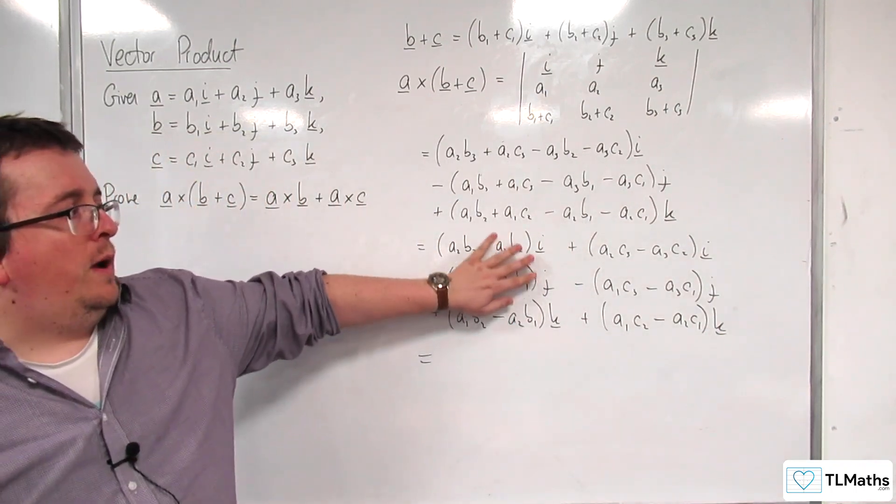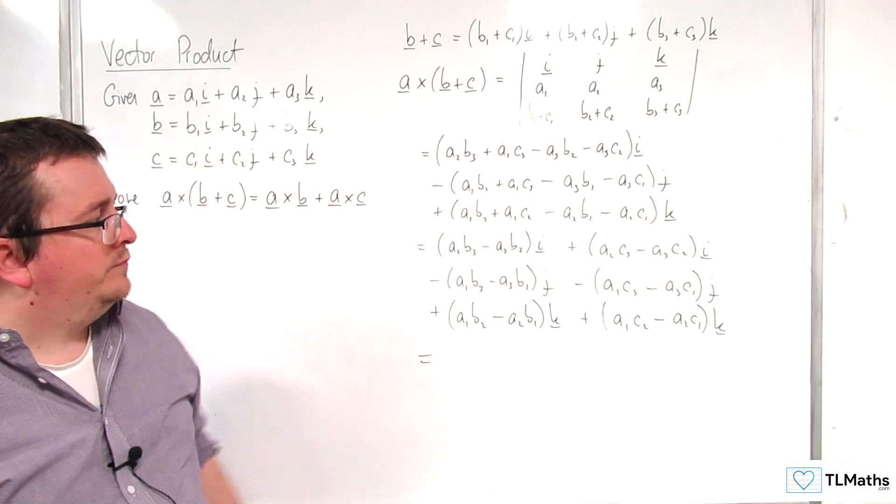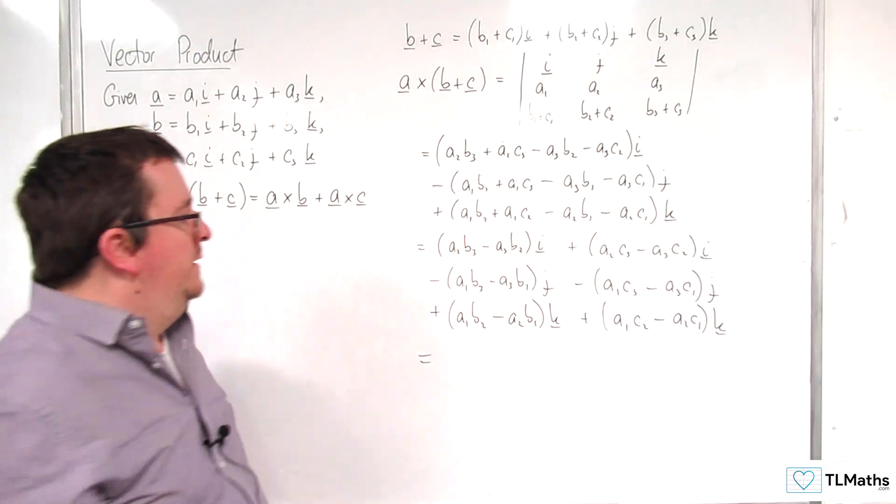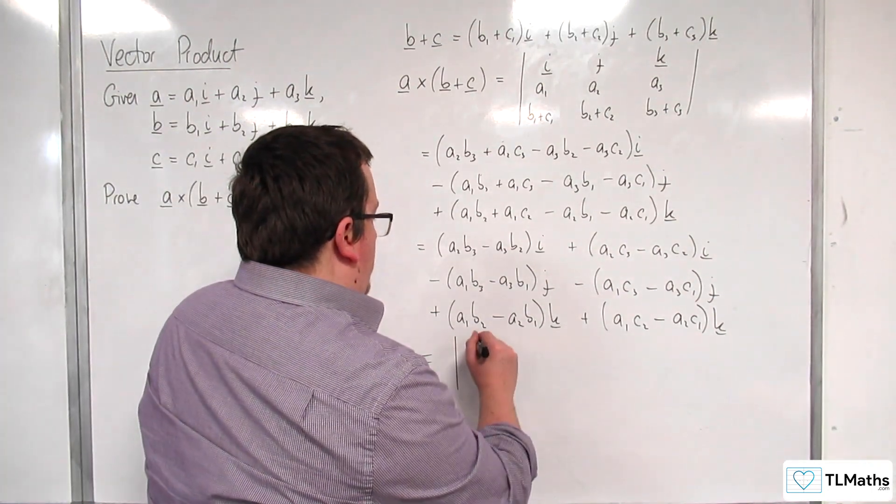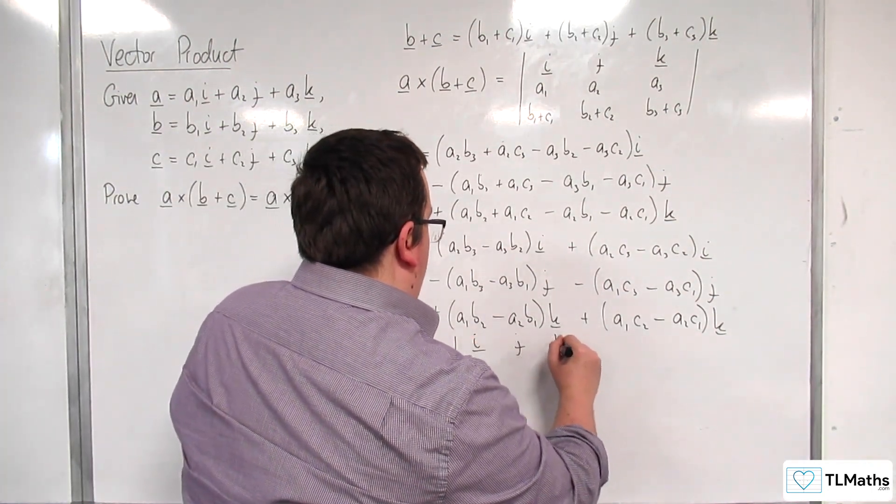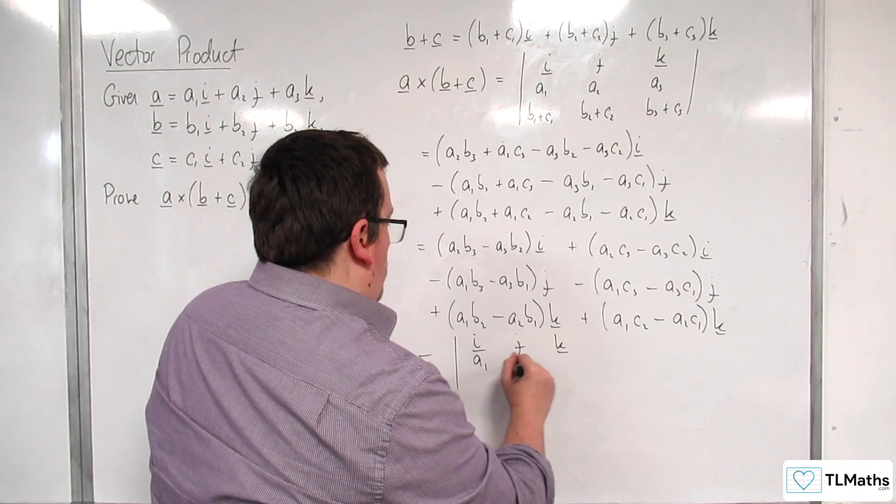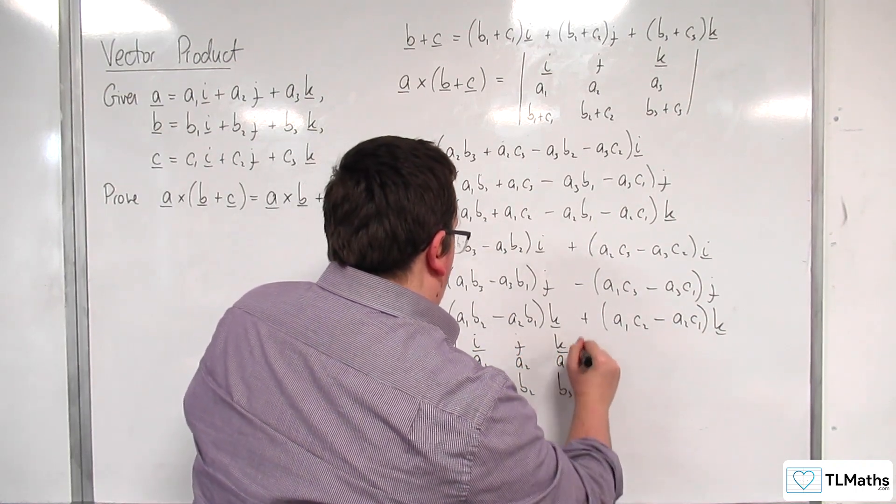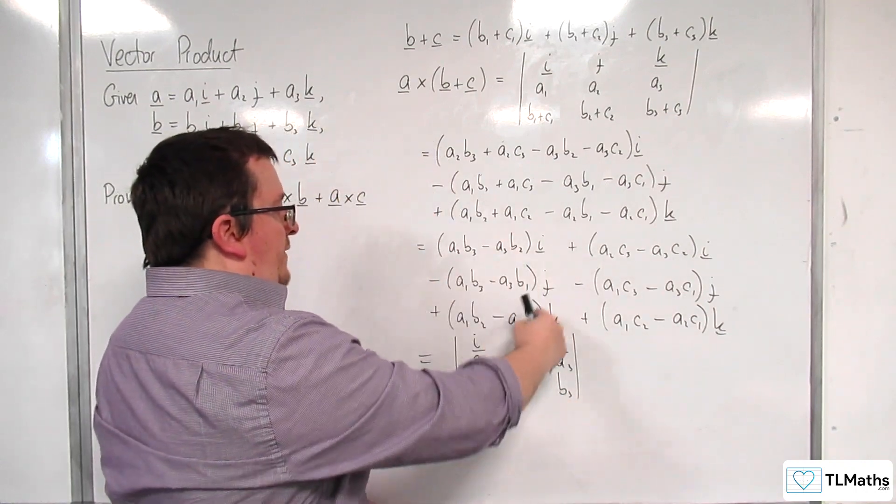So what I've got here together is actually the same as a cross b. So I would be able to write that as the determinant i j k, a1, a2, a3, b1, b2, b3. So that's all of that together.